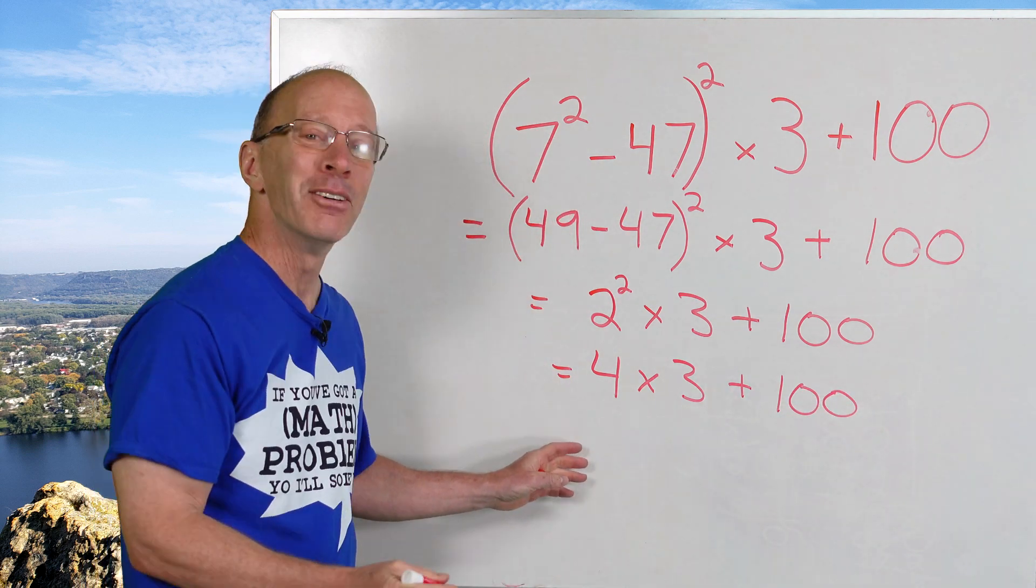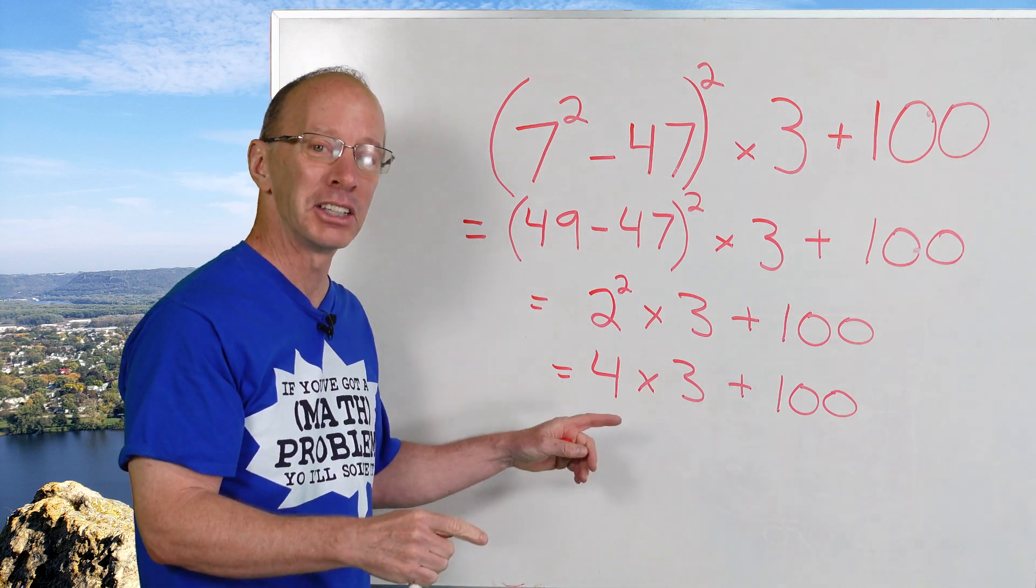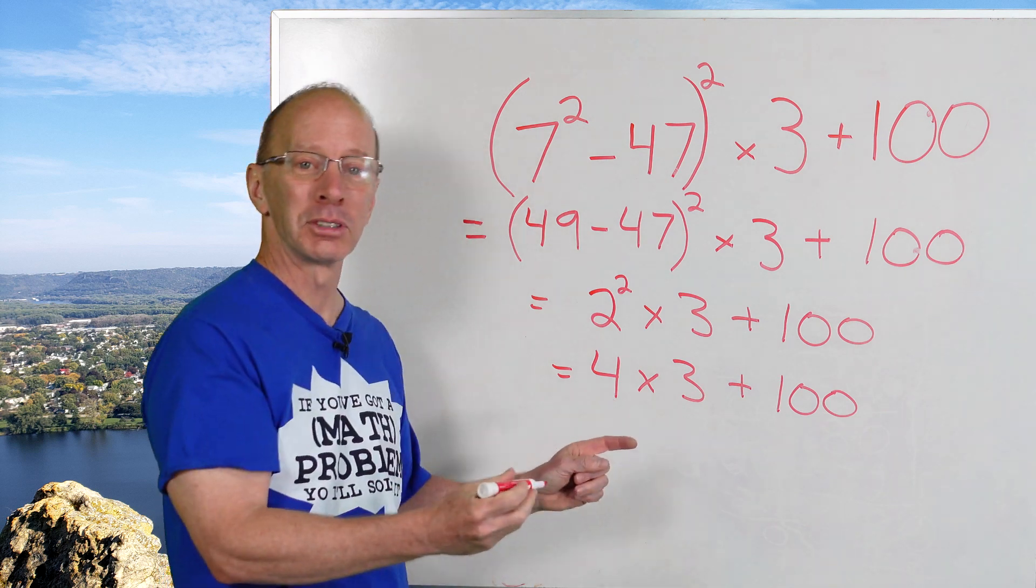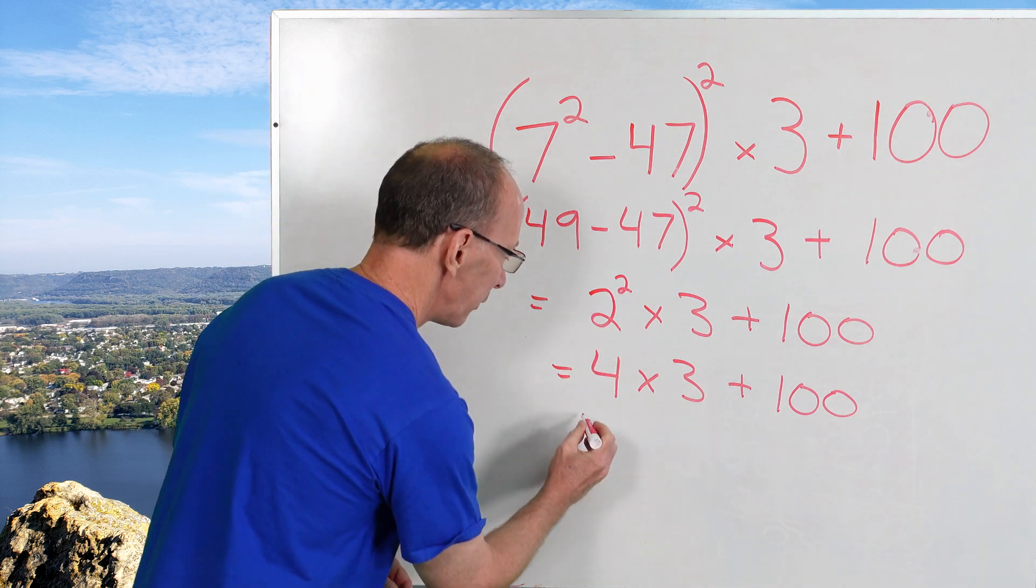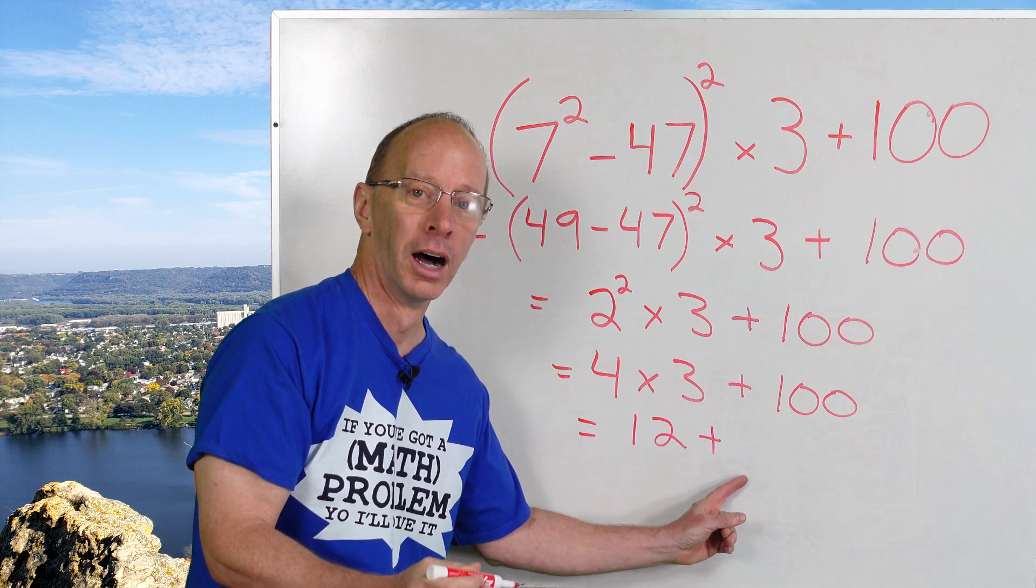Now we do multiplication and division. There's no division, so we're going to do multiplication from left to right. So 4 times 3 is 12